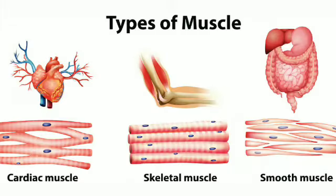Now let's learn types of muscles according to the structure. According to the structure, they are divided into three parts: skeletal muscles, heart or cardiac muscles, and smooth muscles. Skeletal muscles are the muscles which are attached to the skeleton and hold the bones. They also give shape to our body.